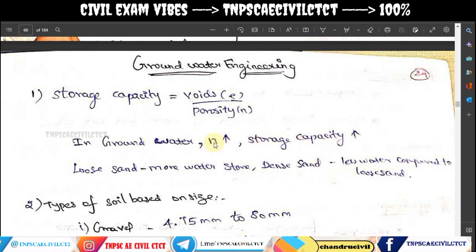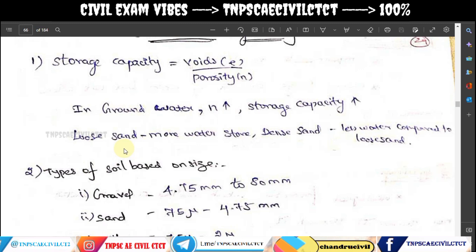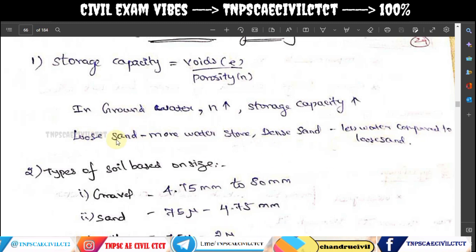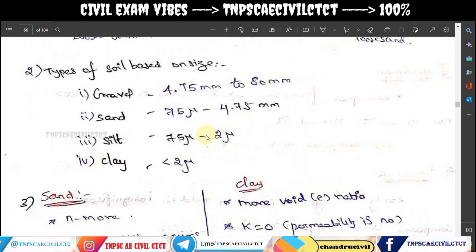That means storage capacity. We can increase the porosity to increase the storage capacity and thereby increase the water. For loose sand, we can increase the porosity. The moisture in the soil can be fixed in a pipe at the center — this will be fixed in the sand.